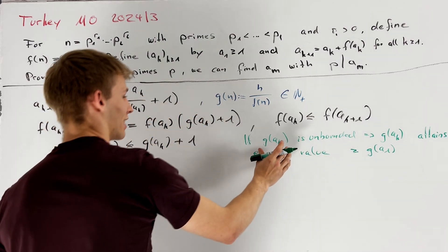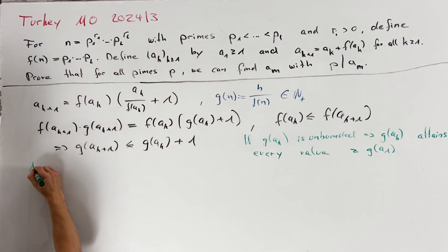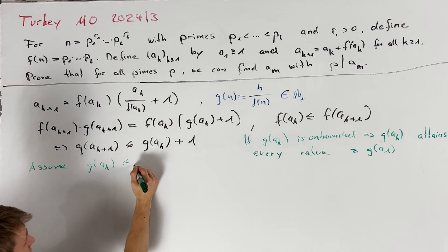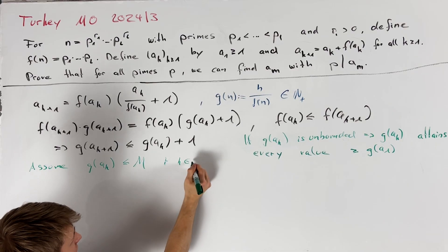To prove that g of a_k is indeed unbounded we want to make a proof by contradiction. So assume that g of a_k is less than or equal to some m for all k in the positive integers.